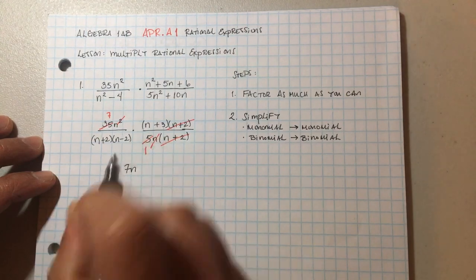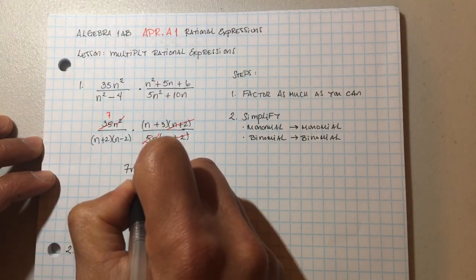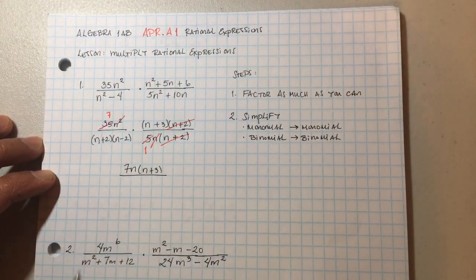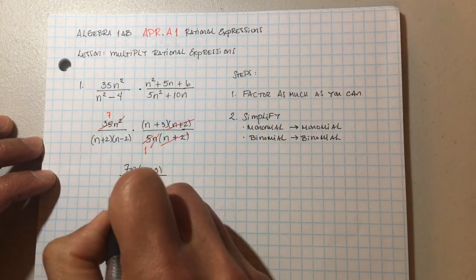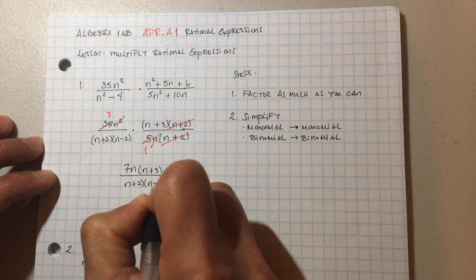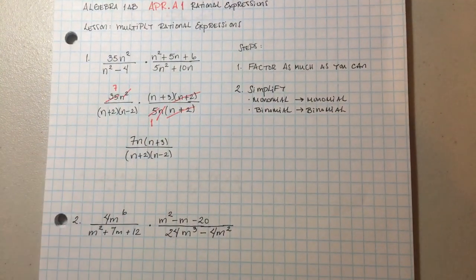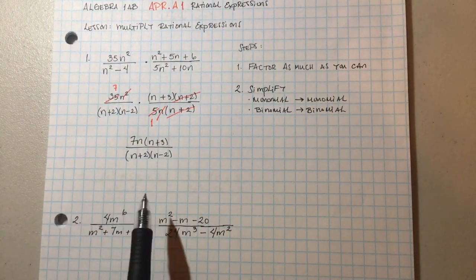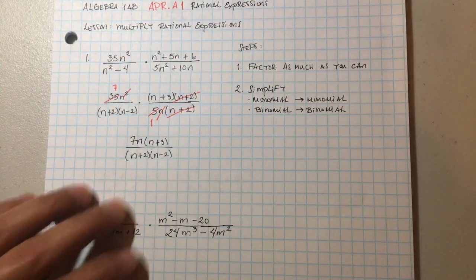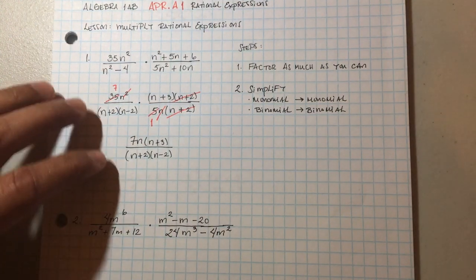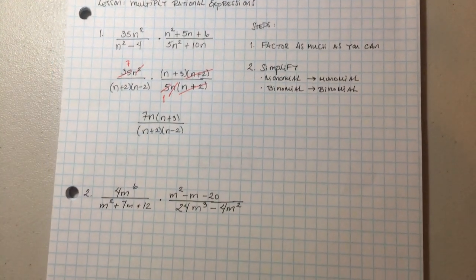So my final solution is seven n times n plus three — remember we have one n left on top — and then n plus three. On the bottom we're left with n plus two times n minus two. You don't have to multiply it out; you can leave it factored. Your professor will tell you to leave it like this. And that's your answer for multiplying these rational expressions.